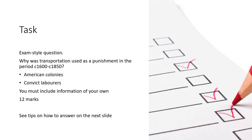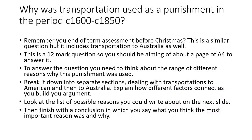You've got one task, but it's a big one — it's an exam question worth 12 marks. The question is: why was transportation used as a punishment in the period 1600 to 1850? You're asked to think about American colonies and convict labourers, that's prison workers in Australia. You also need to include ideas of your own, and I'm going to help you with that on the next slide.